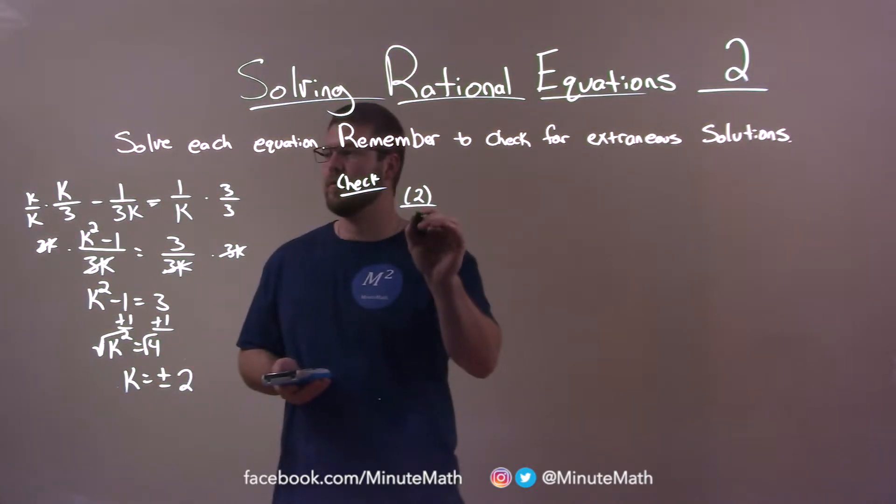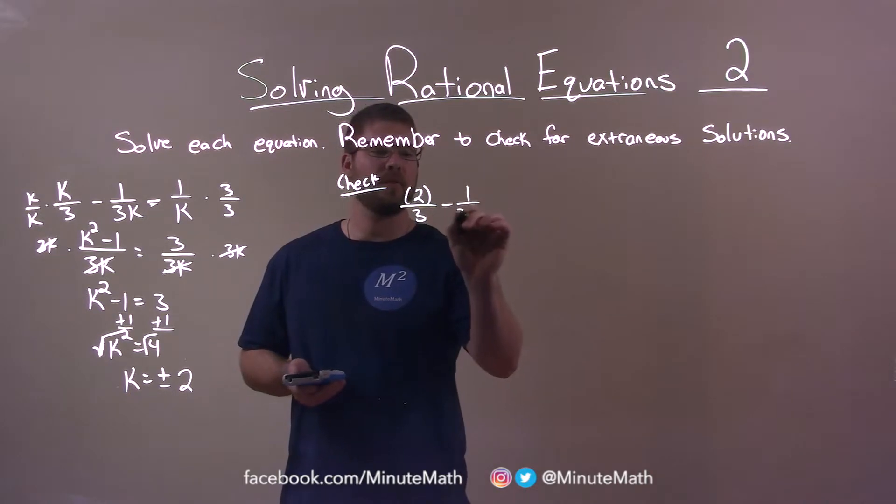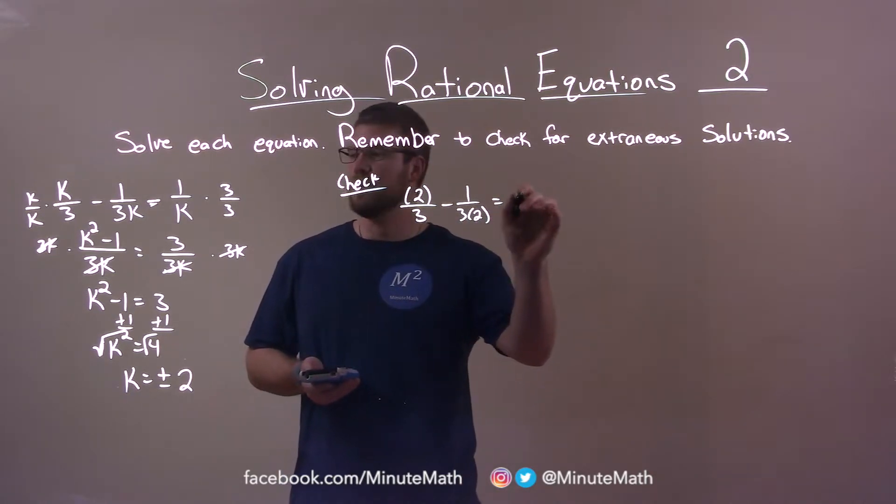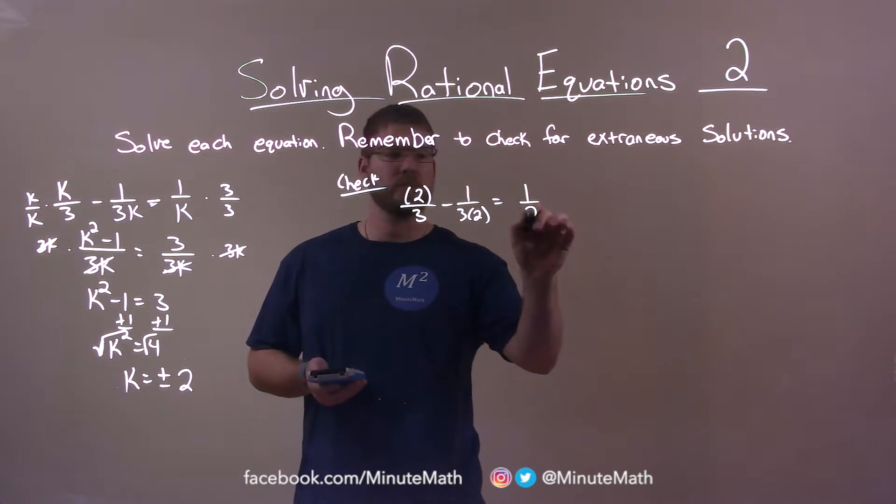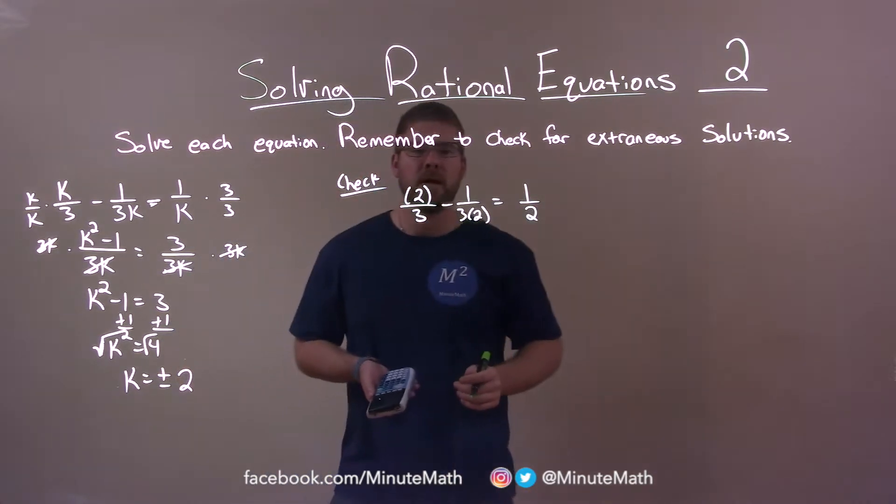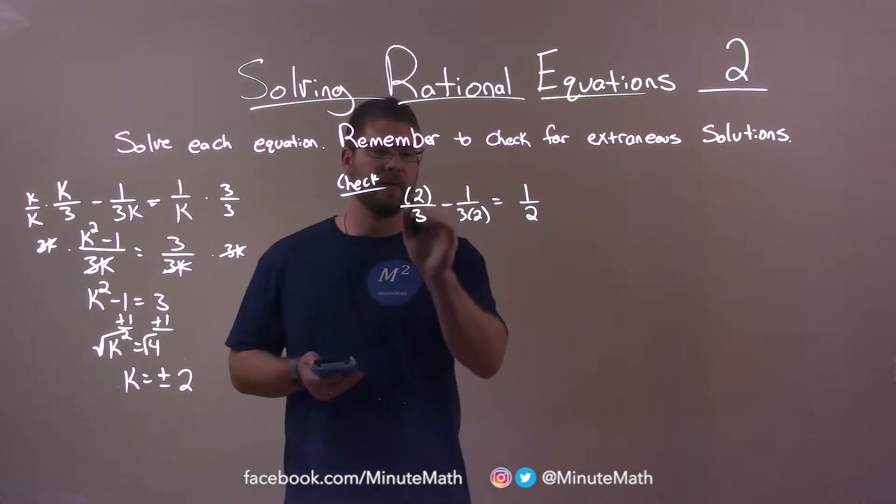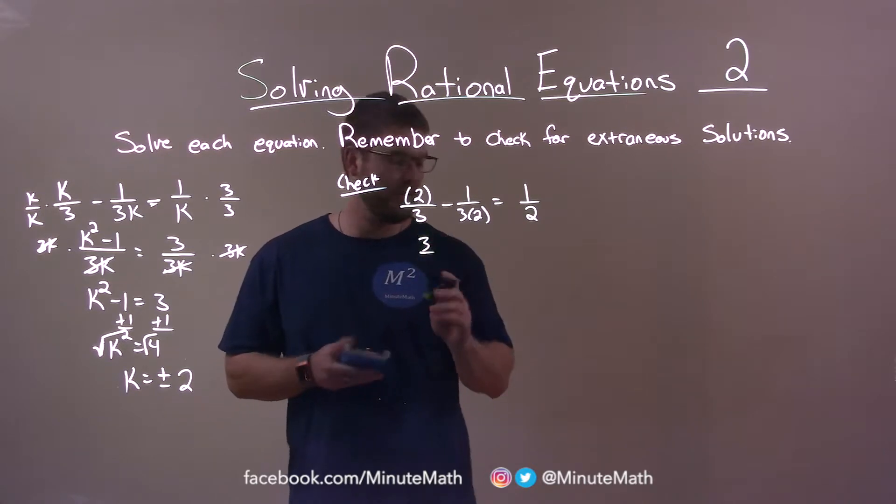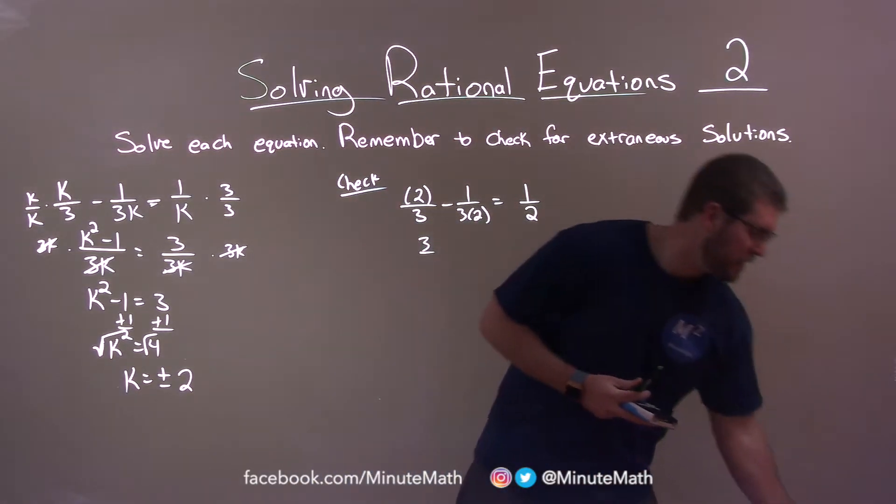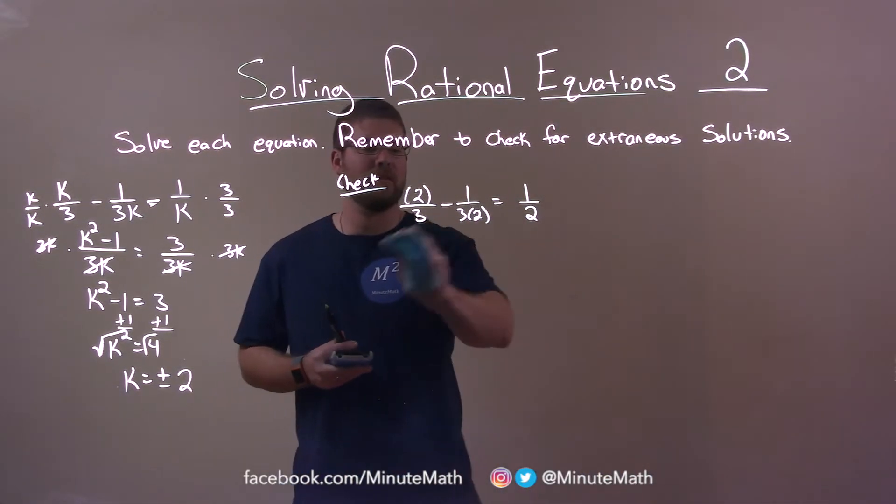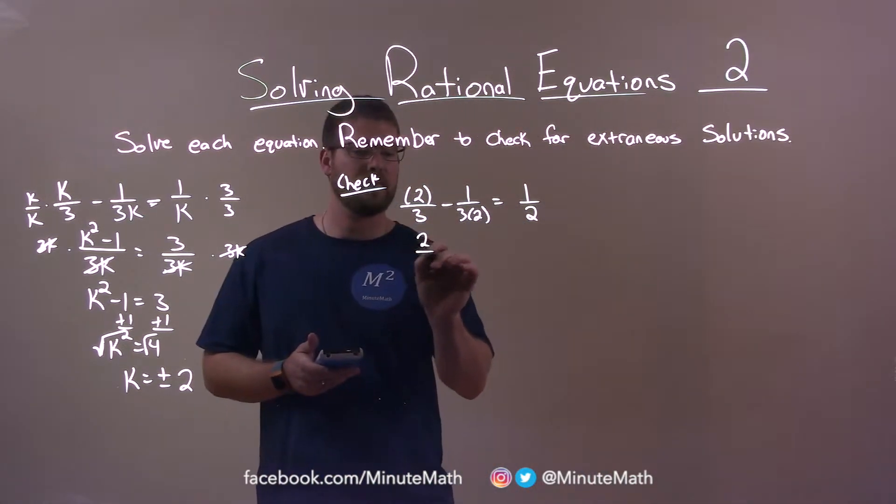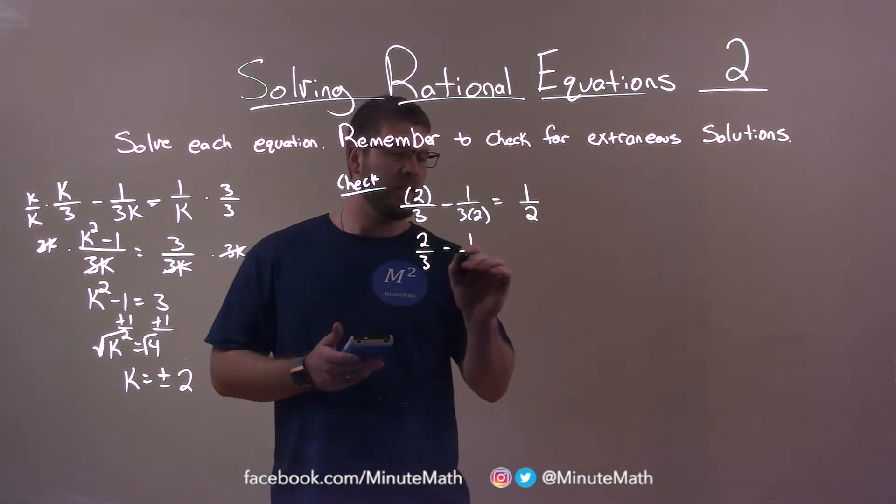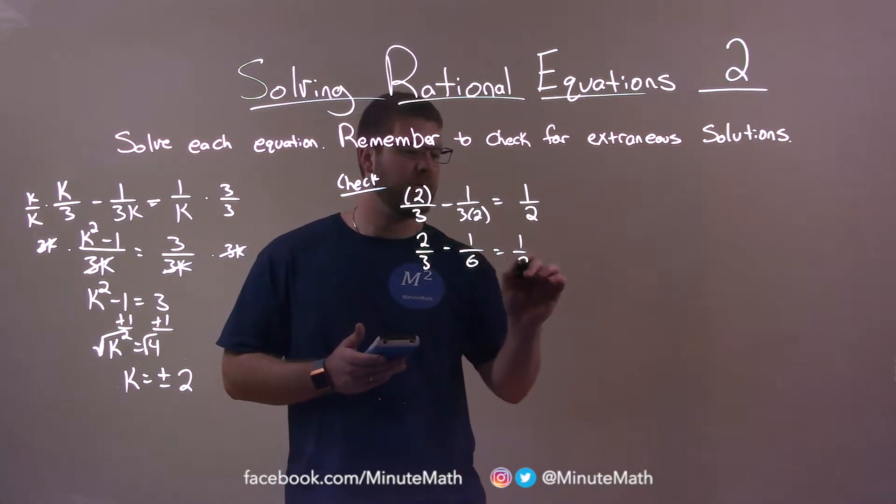2 over 3 minus 1 over 3 times 2 equals 1 over 2. Alright? Now, we're going to see if the left and right-hand side are equal. Well, we have 2 thirds here. Oh, get ahead of myself. 2 thirds, not 3 halves. 2 thirds minus 1 sixth equals 1 half.